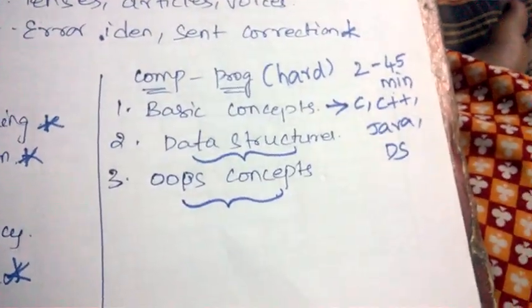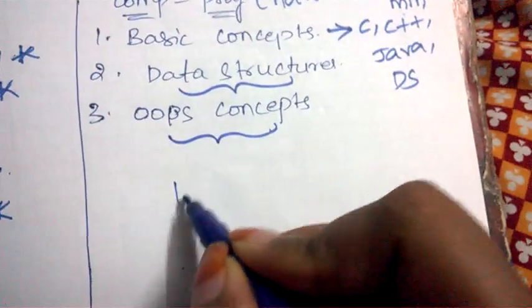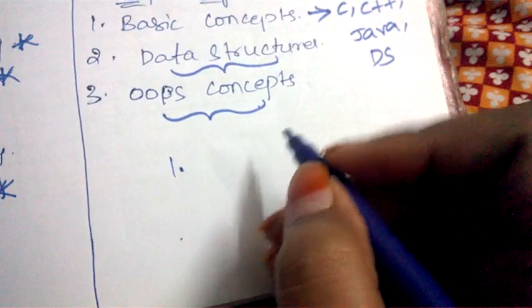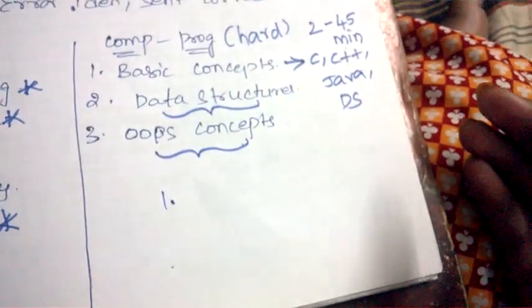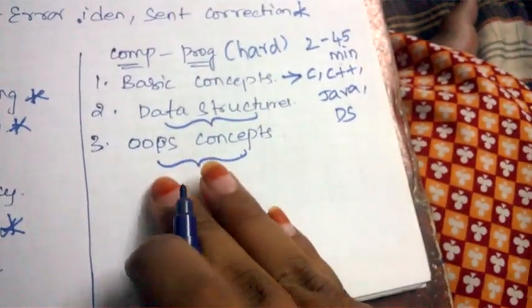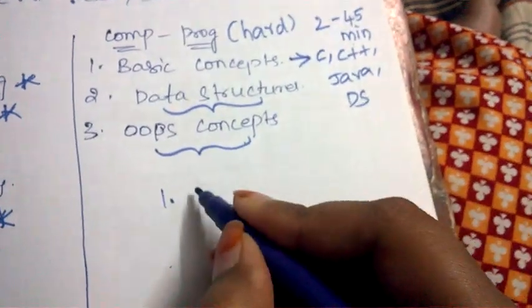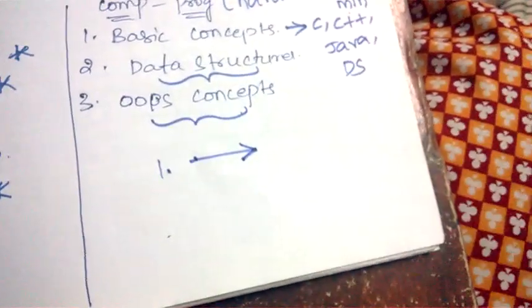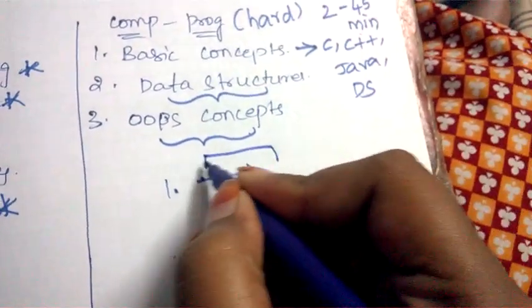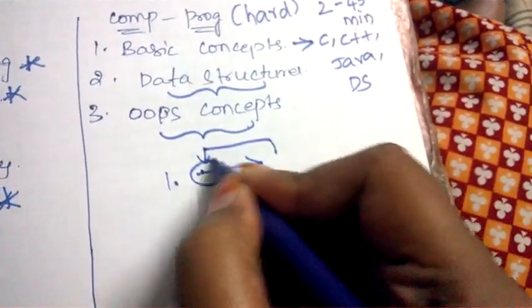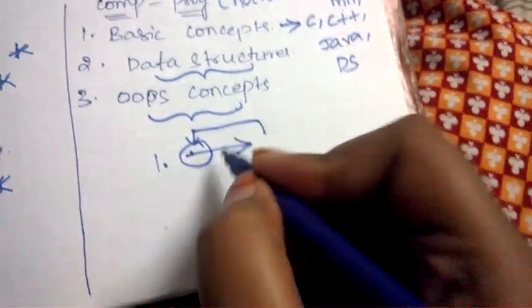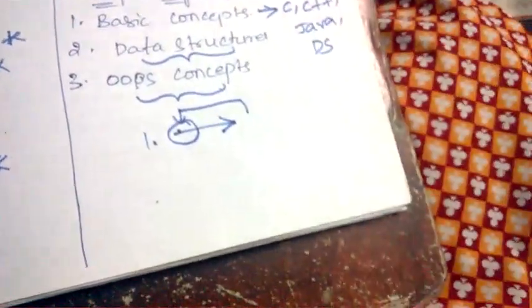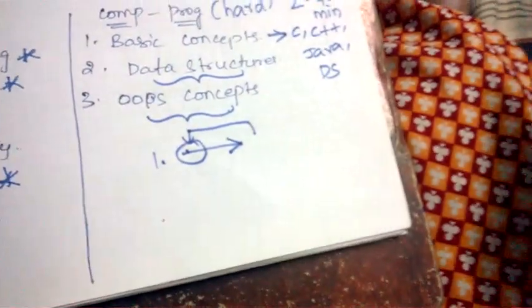The first tip is if you have the option to switch the questions and come back to the previous question, do one thing: if you don't know any question just go to next question, solve the easy questions first and then come to this question and spend time on the question which you were unable to solve before. So your time will be managed well.